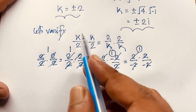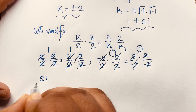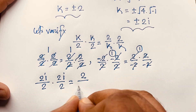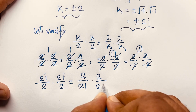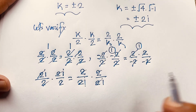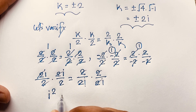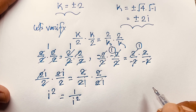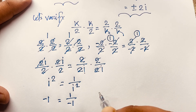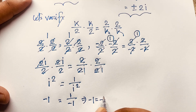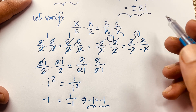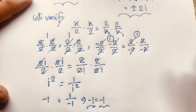For k equals 2i: we get 2i over 2 times 2i over 2 equals 2 over 2i times 2 over 2i. The 2's cancel out and we find i squared equals 1 over i squared. Now i squared equals negative 1, so we get negative 1 equals negative 1. Left hand side equals right hand side, so k equals 2i is verified.